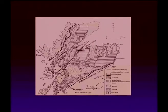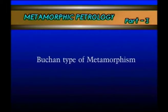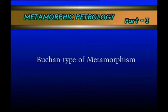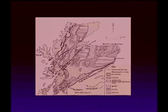Later mapping in the Buchan region of the Eastern Dalriadians revealed a sequence of progressive metamorphism different from the Barrovian zones. The Buchan zone sequence is: cordierite, andalusite, sillimanite. This sequence represents the Buchan type of metamorphism, where andalusite and sillimanite along with cordierite indicate low pressure and temperature metamorphism. Both sequences — Barrovian type and Buchan type of metamorphism — can be seen on the map.